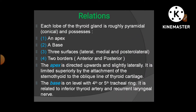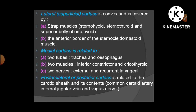Each lobe of the thyroid gland is roughly pyramidal in shape, with an apex, a base, three surfaces, and two borders. The apex is directed upward and slightly laterally, and is limited superiorly by the attachment of the sternothyroid to the oblique line of the thyroid cartilage. The base is located at the level of the 4th or 5th tracheal ring and is related to the inferior thyroid artery and the recurrent laryngeal nerve.